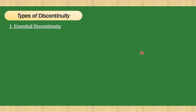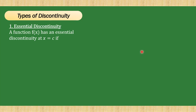There are two types of discontinuity. The first is essential discontinuity. Given a function f of x, it has an essential discontinuity at x equals c if its limit as x approaches c does not exist.